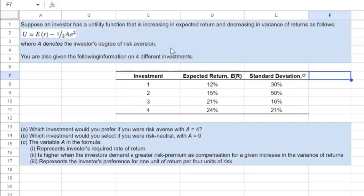And the other thing that is important here is how risk averse we are, which is represented by this variable A.